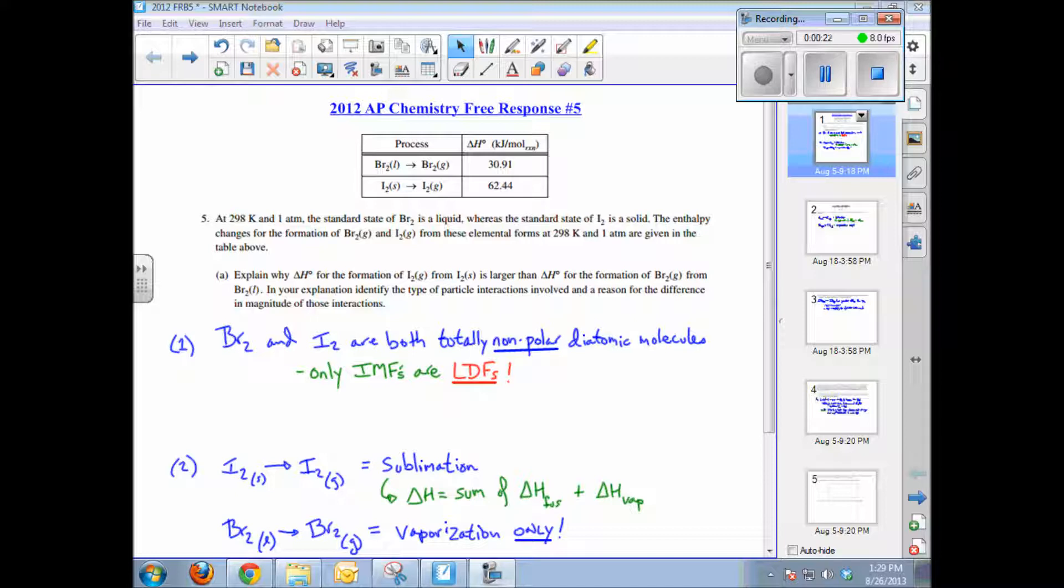You're shown a table of the delta H of formation for both bromine and iodine gas. Question A states: Explain why the delta H of formation for iodine gas from the solid is larger than the delta H of formation of bromine gas from the liquid.